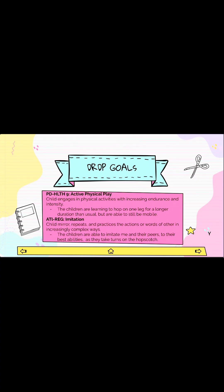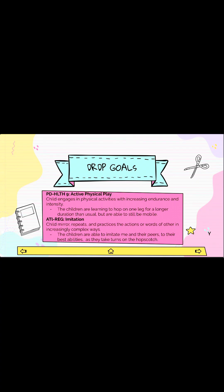It could be easier for some children and more difficult for others based on their age and developmental abilities. The two teaching strategies I utilized in my activities were demonstrate and encourage. The purpose of the teaching strategy demonstrate is to show the correct way to do something. I was able to model the correct way to be the leader in red light, green light, and demonstrate how to correctly use hopscotch.